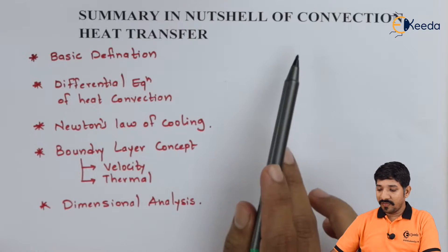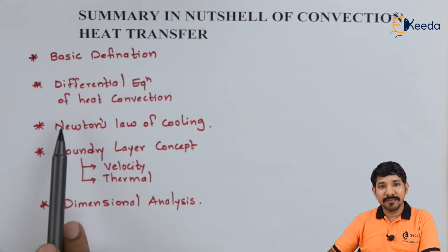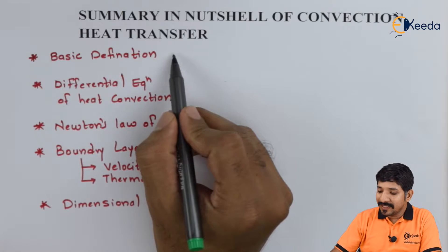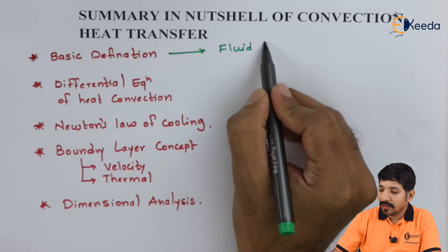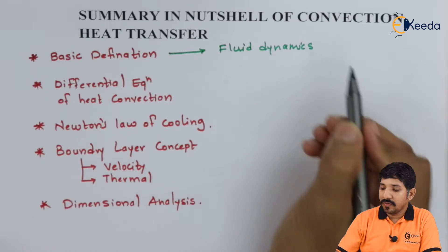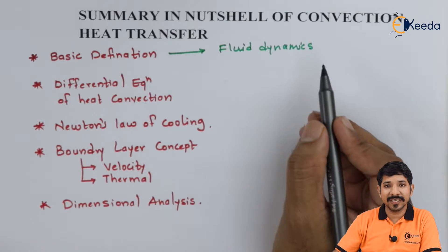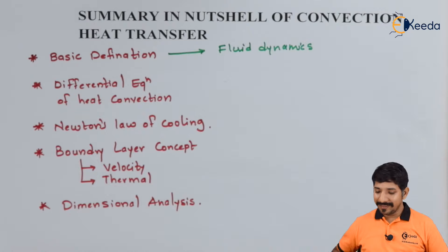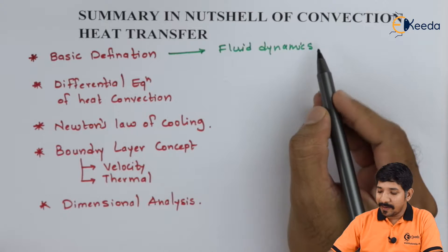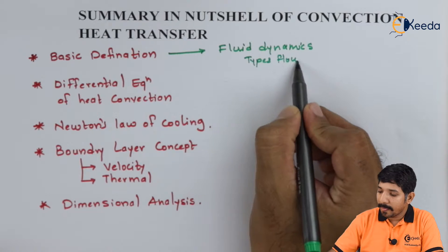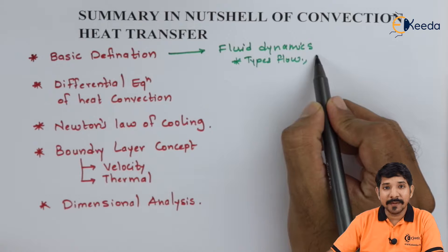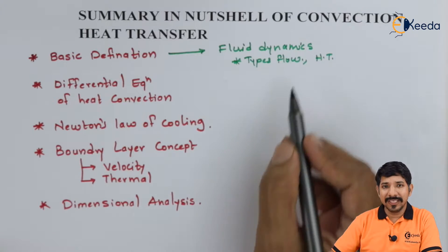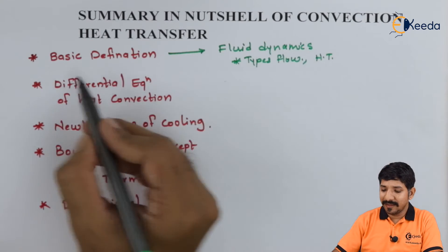In the summary of convection heat transfer, we started with the basic definition. We talked about the various definitions that we have studied in fluid dynamics. In case of flow direction, if the flow is a single degree flow or 2 degree or 3 degree — we talked about various types of flow and the types of heat transfer rate.